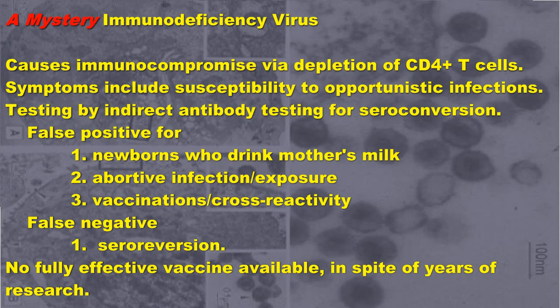Symptoms include susceptibility to opportunistic infections. Testing is by indirect antibody testing for seroconversion by ELISA. False positives are known for newborns who drink mother's milk, abortive infections or exposures, vaccinations, or cross-reactivity.